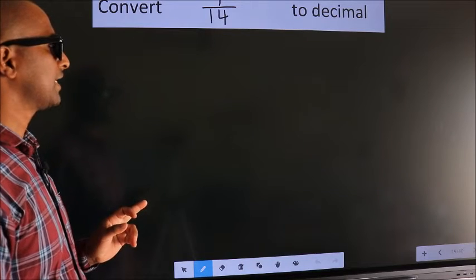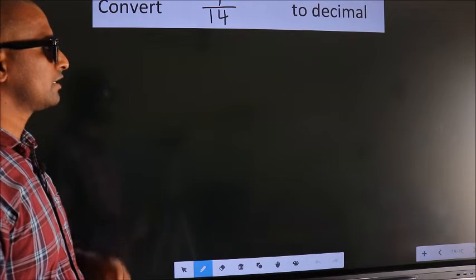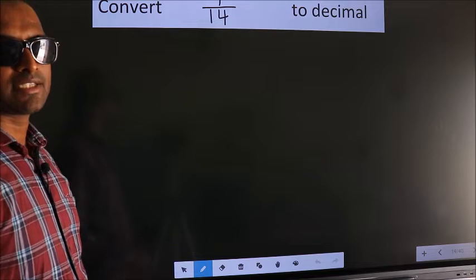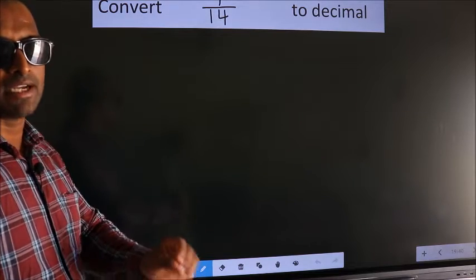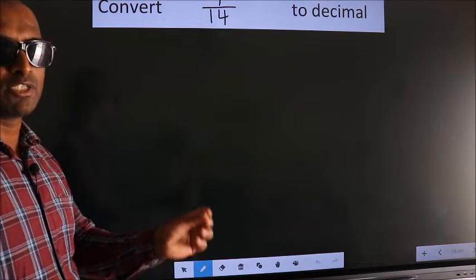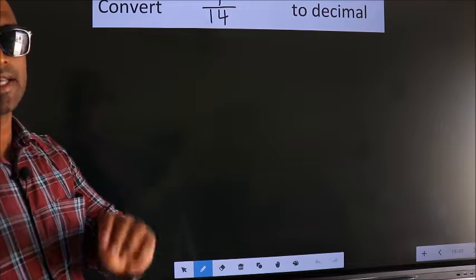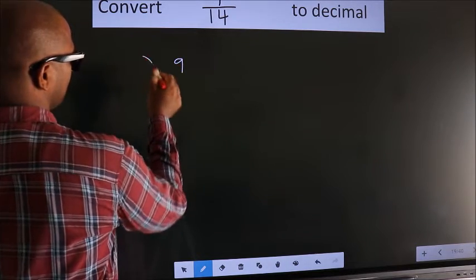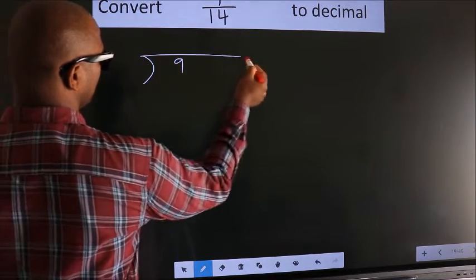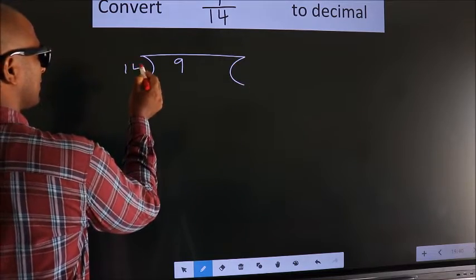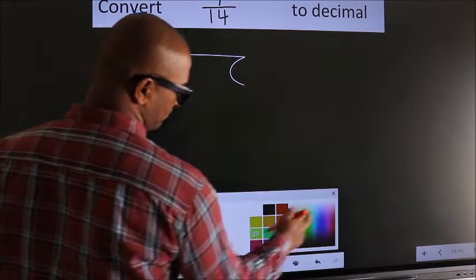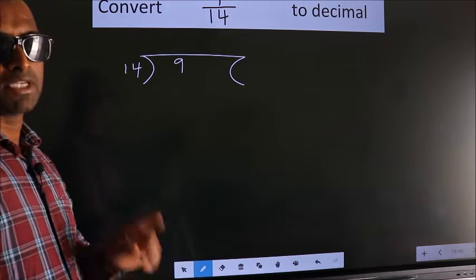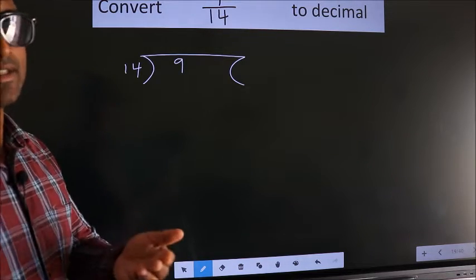Convert 9 by 14 to decimal. To convert this to decimal, we have to divide. And to divide, we should frame it in this way — 9 here, 14 here. This is your step 1.